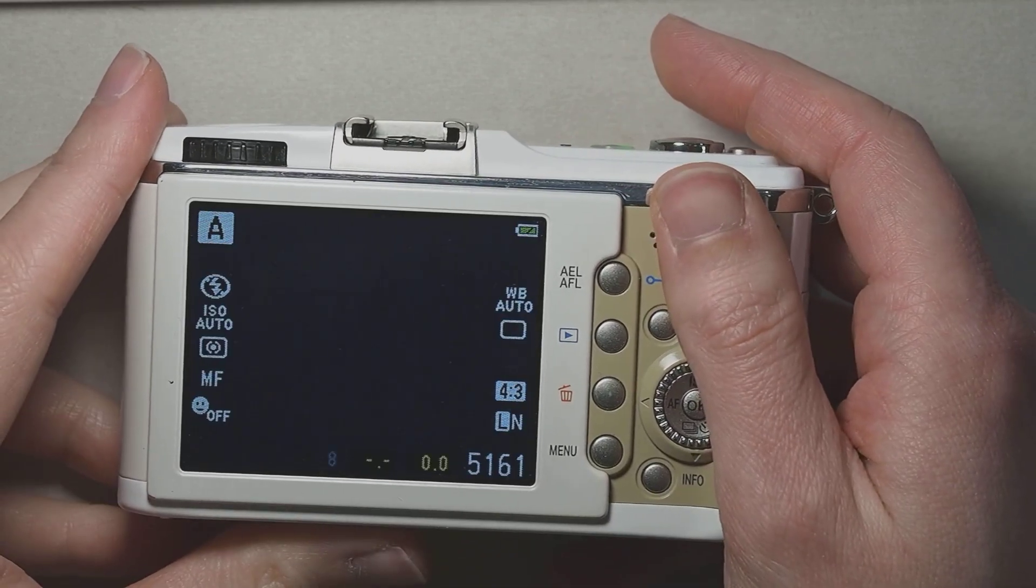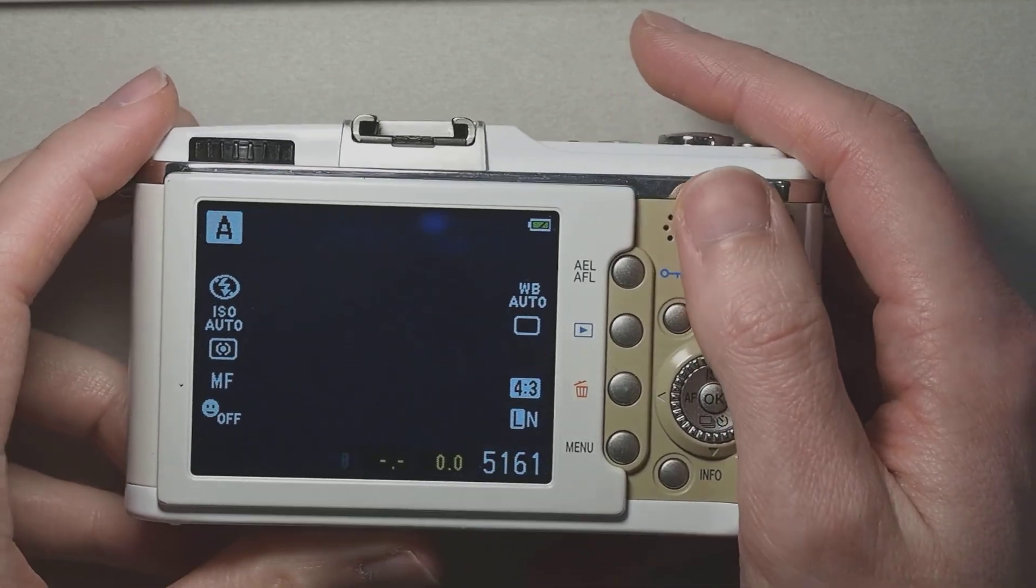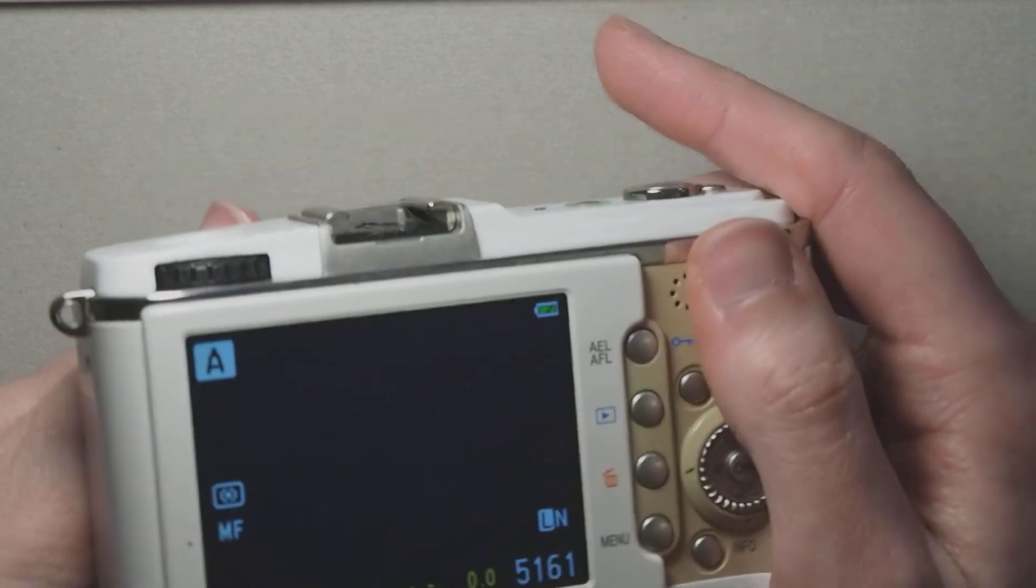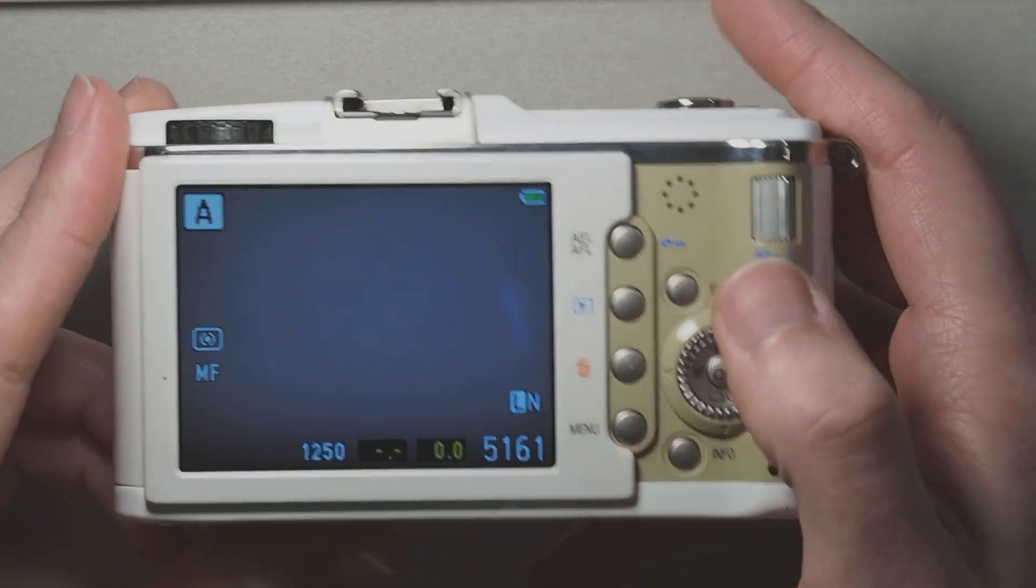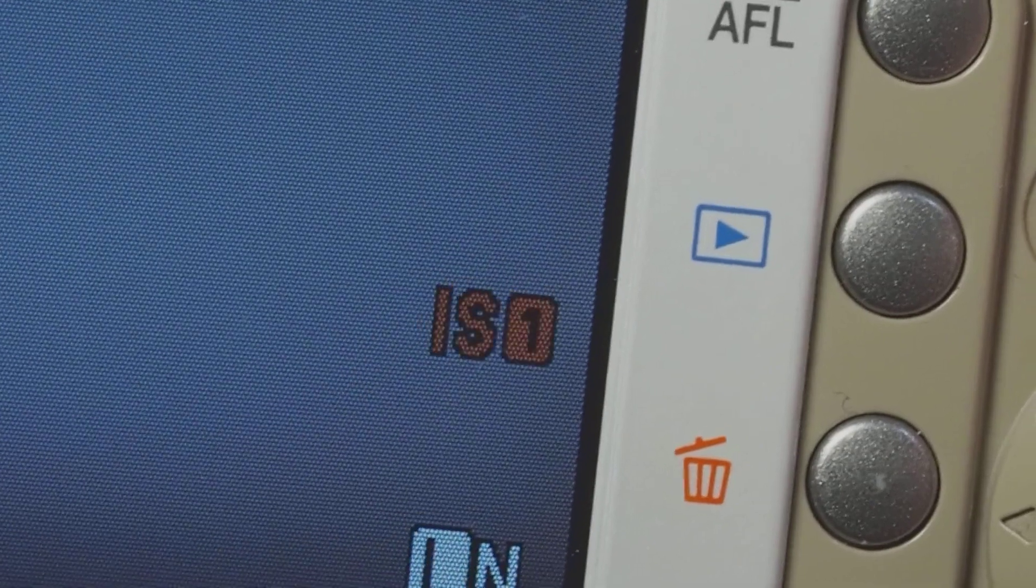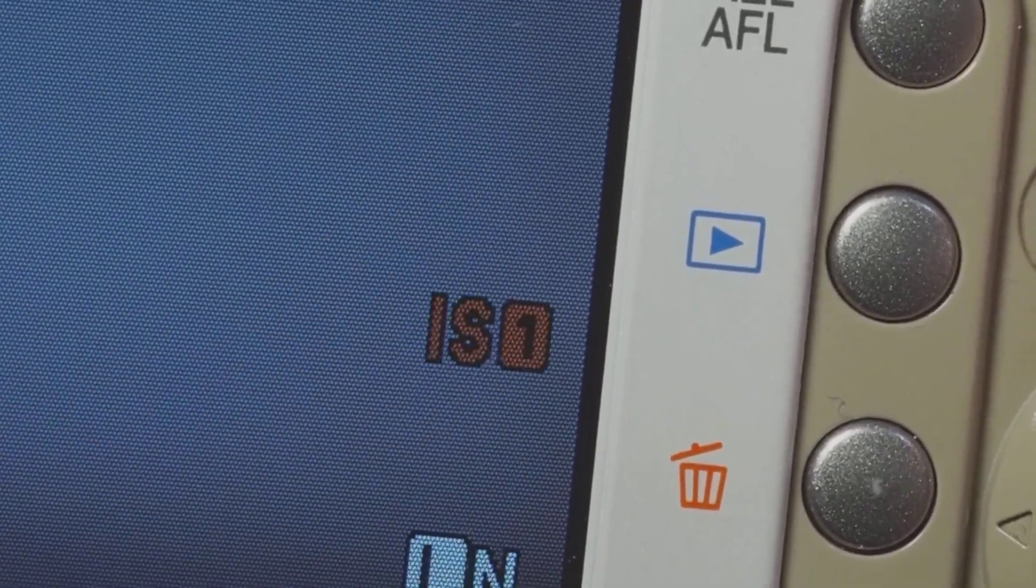Note that the camera still detects the IBIS as broken and it will keep flashing in red even if you turn off IS. But at least the sensor is centered now and for daylight photography this camera is totally fine.